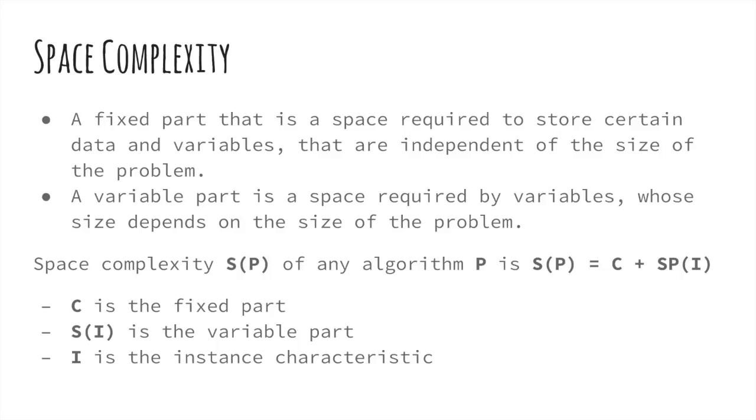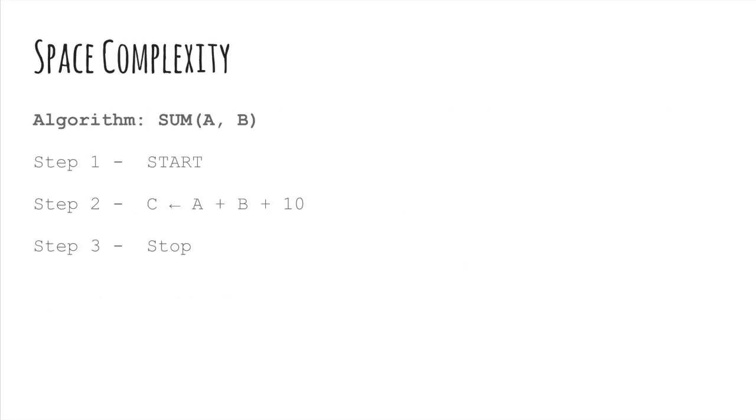Space complexity, S(P), of any algorithm P is S(P) = C + SP(I), where C is a fixed part and S(I) is the variable part of the algorithm which depends on the instance characteristic I. So, the following is a simple example that tries to explain the concept of space complexity. Here we have three variables a, b, and c, and one constant. Hence, S(P) is equal to 1 plus 3. Now, space depends on data types of given variables and constant types and it will be multiplied accordingly.